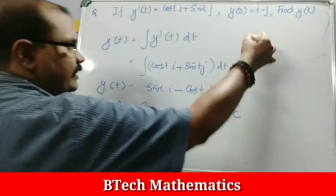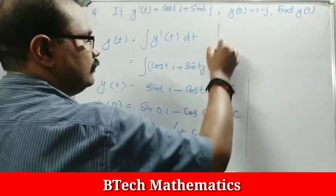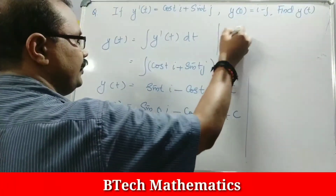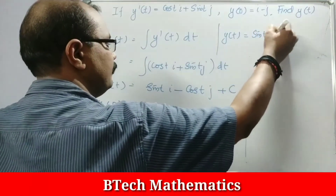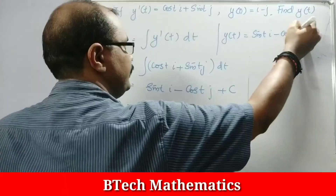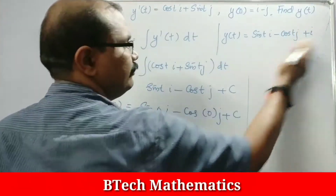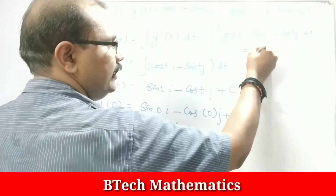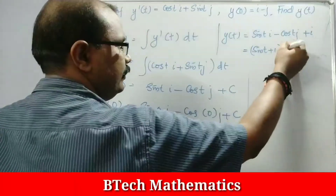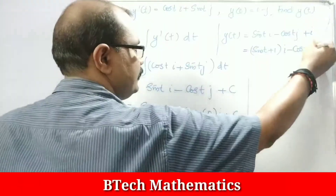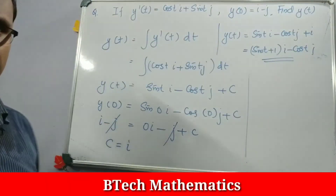Substituting C back, Y of T equals sin T i minus cos T j plus i. Taking i as common, Y of T equals (sin T plus 1) i minus cos T j. This is the final function Y of T.